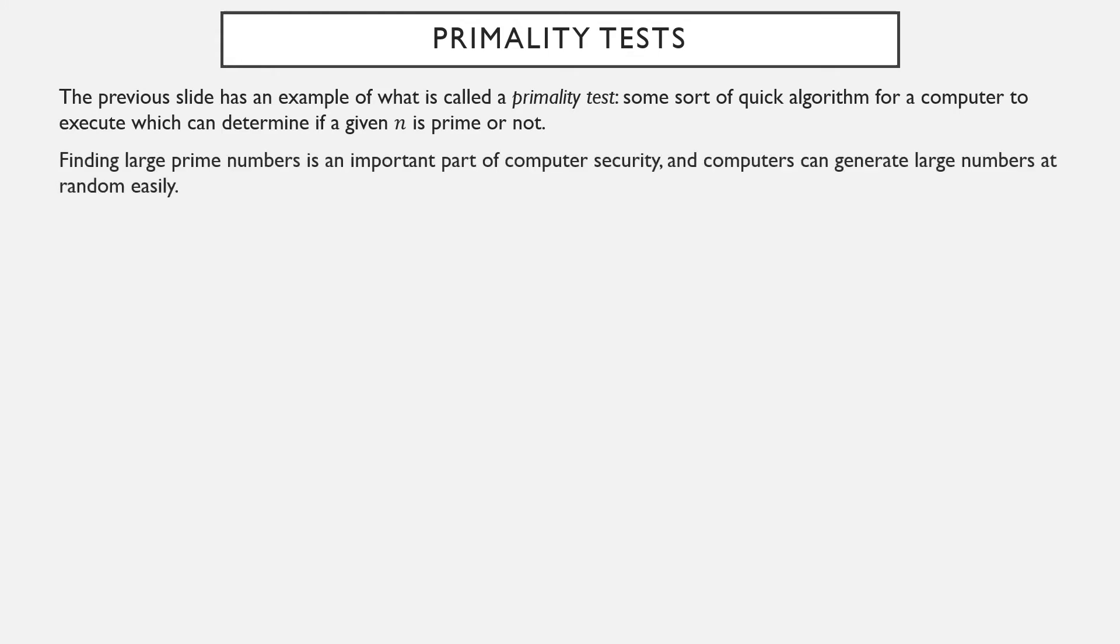This gives us a notion of a primality test, to test if a certain number is prime or not. Some sort of quick way, for a computer at least, to determine whether a given number is prime. Finding big prime numbers is an important part of computer security, and computers can generate large numbers very easily. The question then becomes, if it generates a large number, did it generate a prime one?